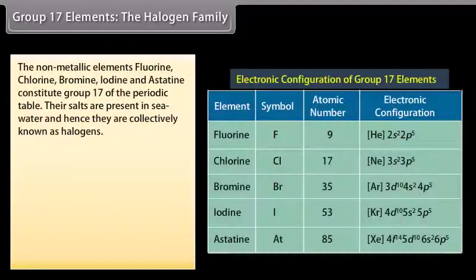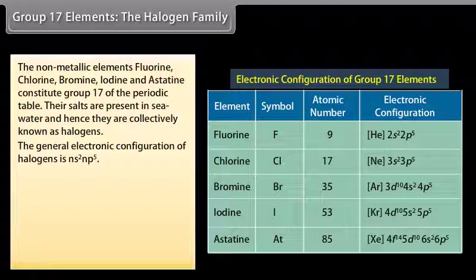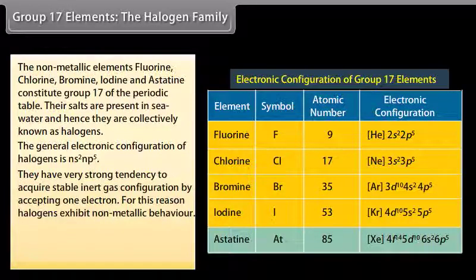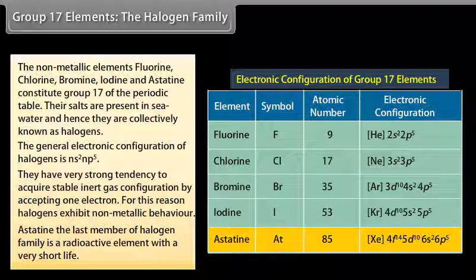Group 17 elements — the halogen family. The non-metallic elements fluorine, chlorine, bromine, iodine and astatine constitute group 17 of the periodic table. Their salts are present in seawater, and hence they are collectively known as halogens. The general electronic configuration of halogens is NS²NP⁵. They have a very strong tendency to acquire stable inert gas configuration by accepting one electron, and therefore exhibit non-metallic behavior. Astatine, the last member, is a radioactive element with a very short life.